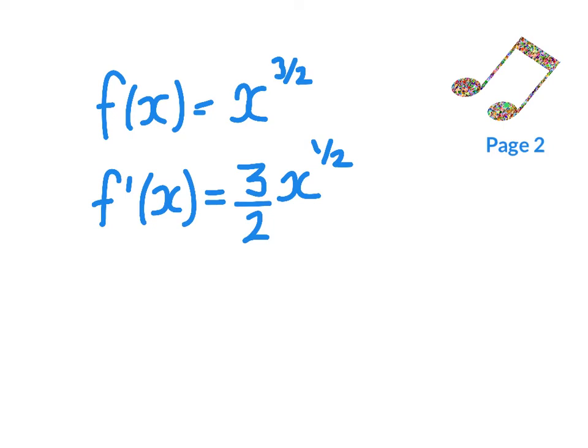Again, I'm going to be using my index rules here. To the power of 1 half is the same as the square root of. So I'm going to tidy that up by writing 3 root x over 2.